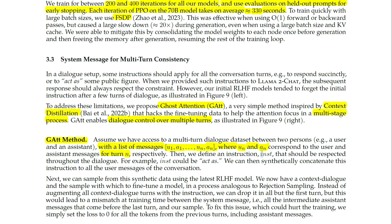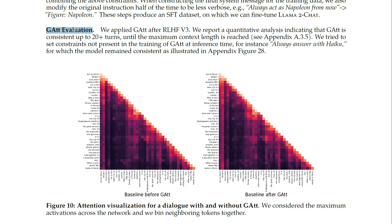They define an instruction, inst, that should be respected throughout the dialogue — for example, inst could be 'act as'. This instruction is synthetically concatenated to all user messages of the conversation. Ghost Attention is applied after RLHF V3. A quantitative analysis indicates that Ghost Attention is consistent up to 20+ turns until the maximum context length is reached.